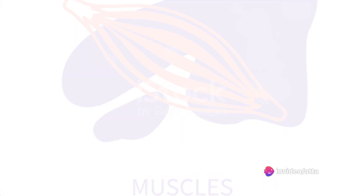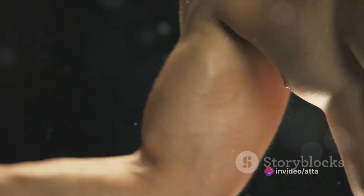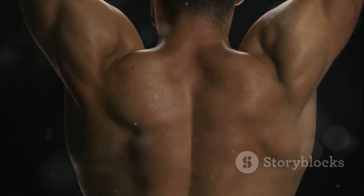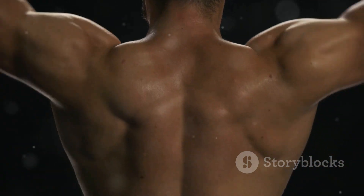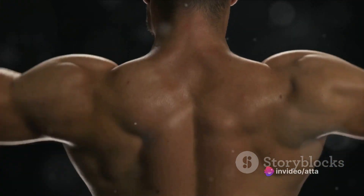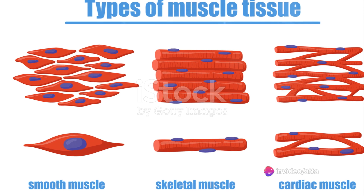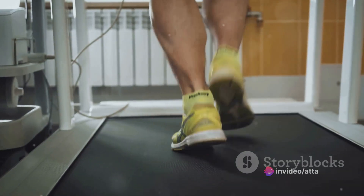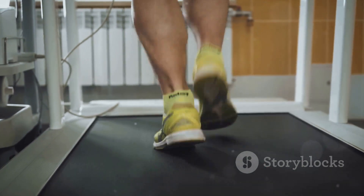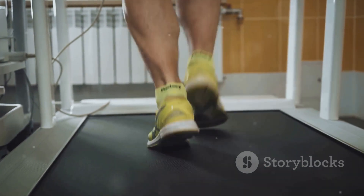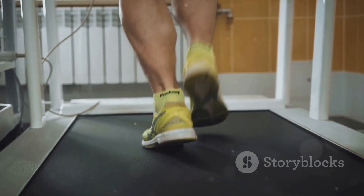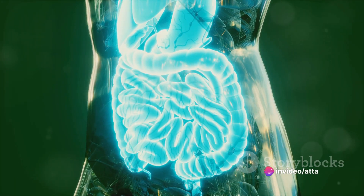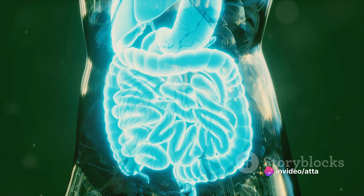We then move on to muscle tissue, the tissue responsible for movement. Think of the beating of your heart, the blinking of your eyes, or the ability to lift a heavy object — all these actions are possible because of muscle tissue. There are three types: skeletal, cardiac, and smooth. Skeletal muscle helps in voluntary movements like running or jumping, while cardiac muscle keeps your heart beating without conscious effort. Smooth muscle, found in organs like the stomach and intestines, helps propel substances through these organs.